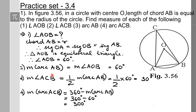Next, measure of angle ACB. Here AOB is the central angle whereas ACB is an inscribed angle. By the inscribed angle theorem, measure of angle ACB is half the measure of arc AB — that is half of 60 degrees — so measure of angle ACB is 30 degrees.